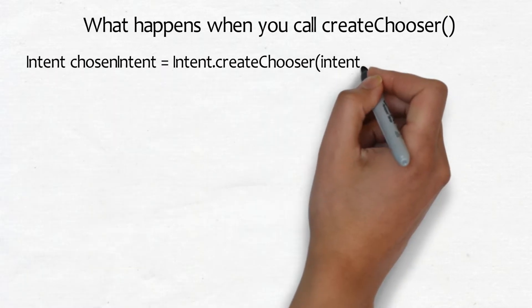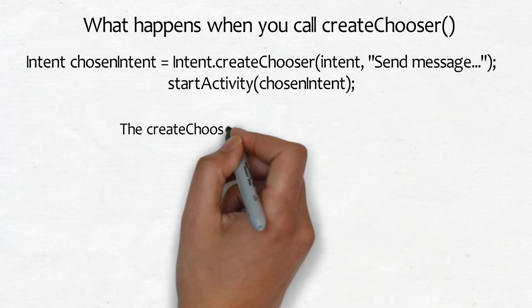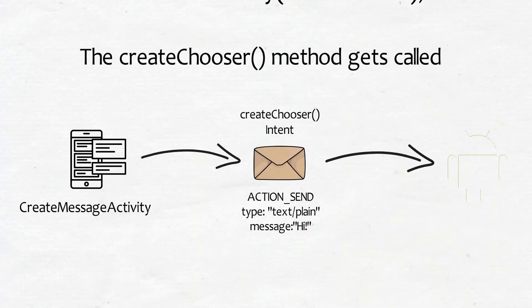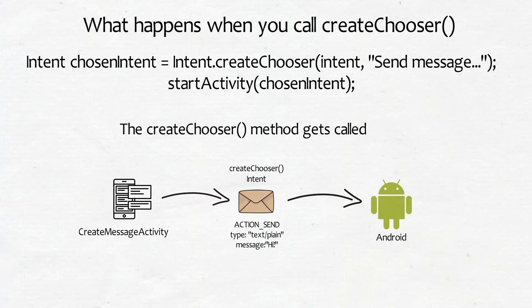When you run the following two lines of code, the createChooser method gets called. The method includes an intent that specifies the action and MIME type that's required.